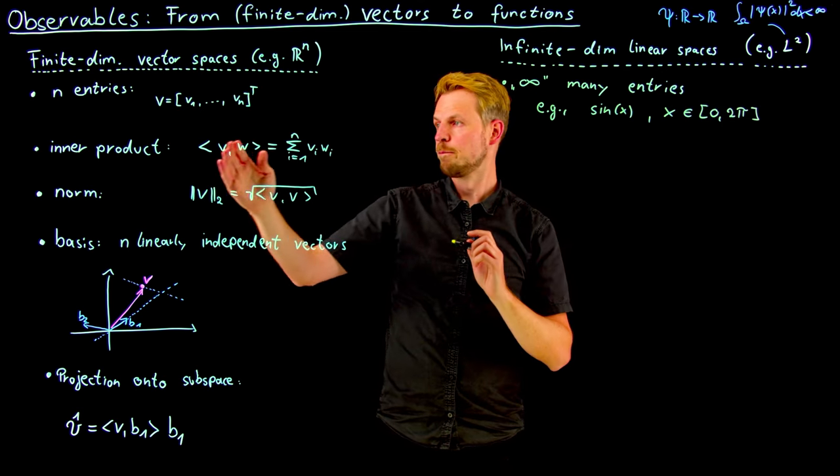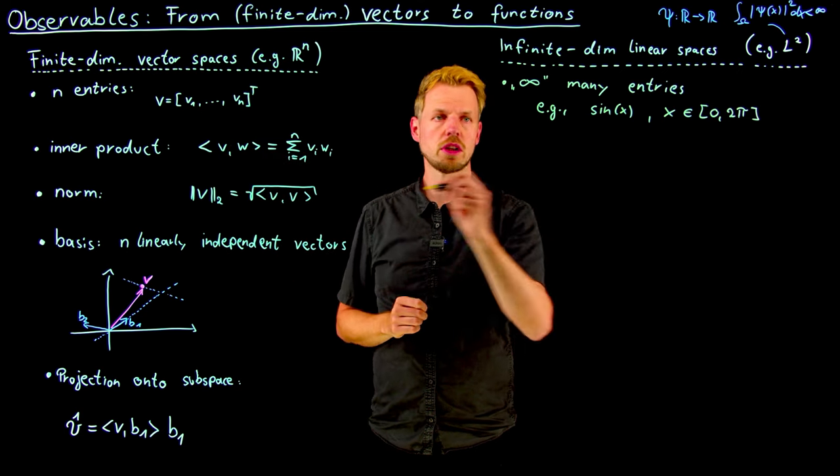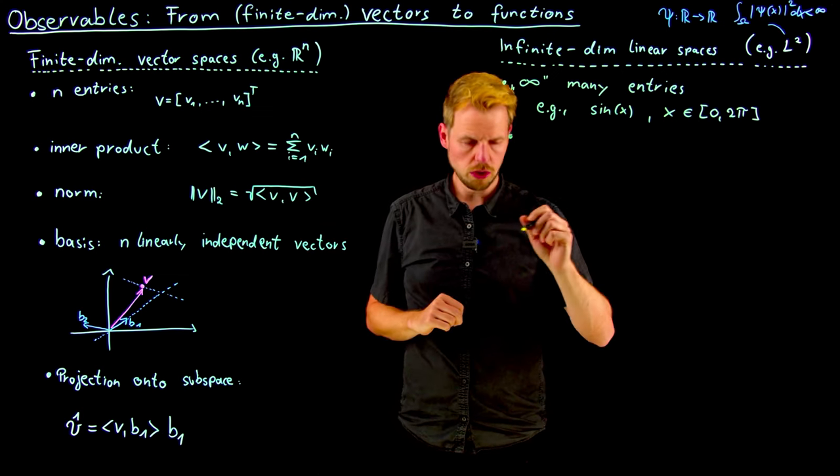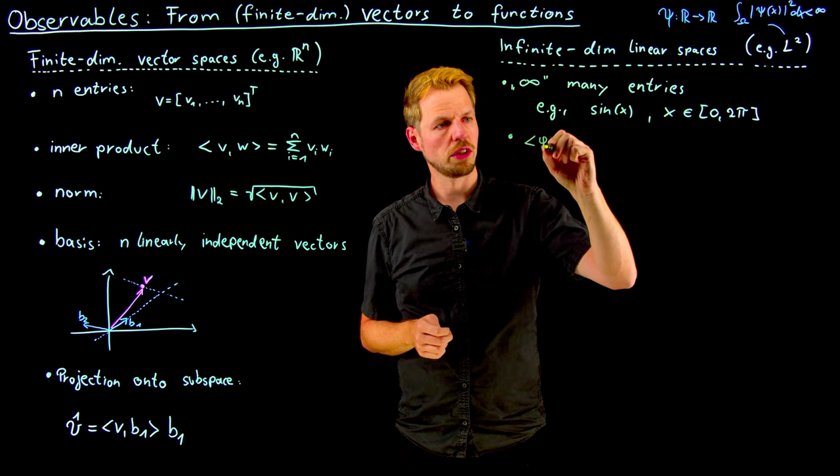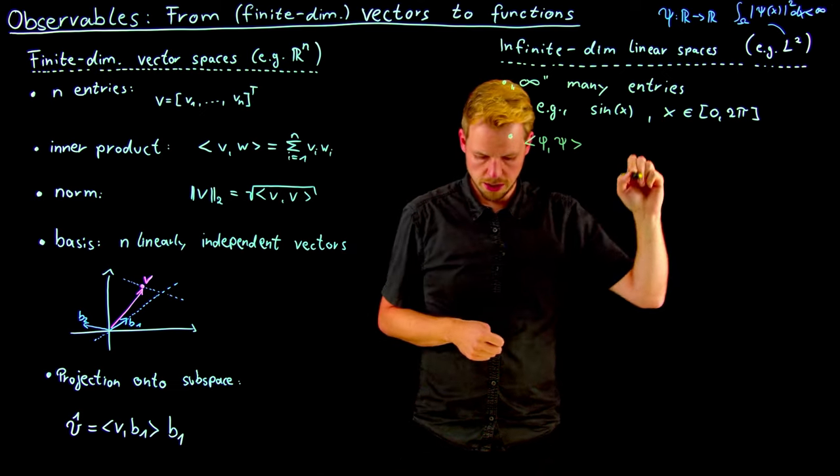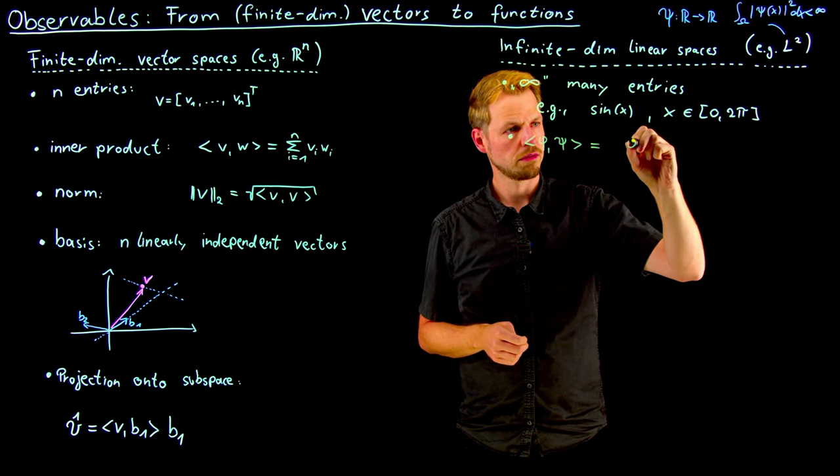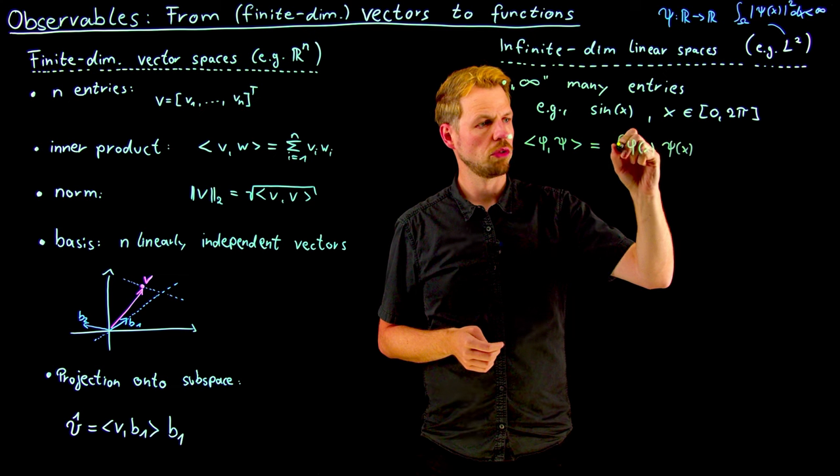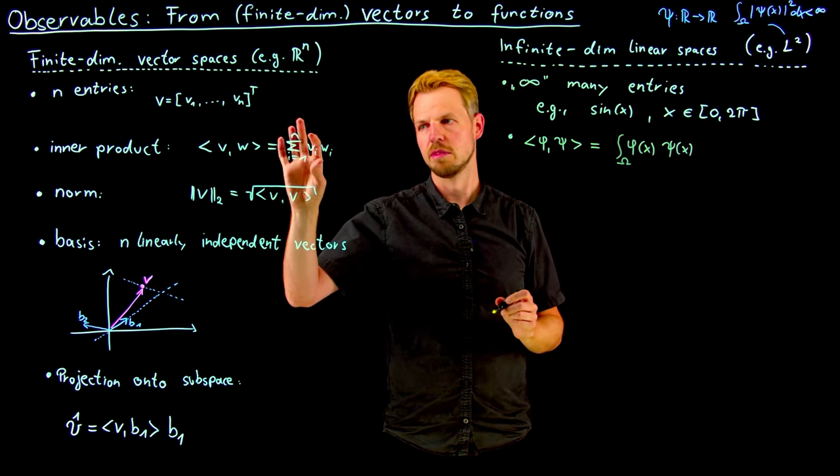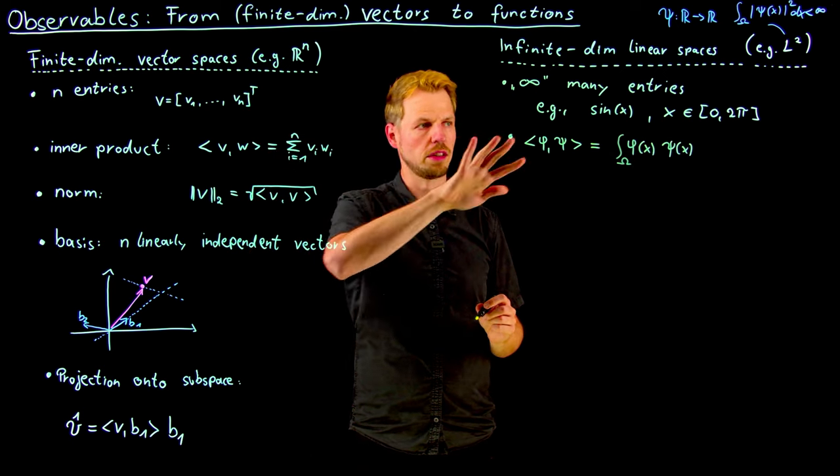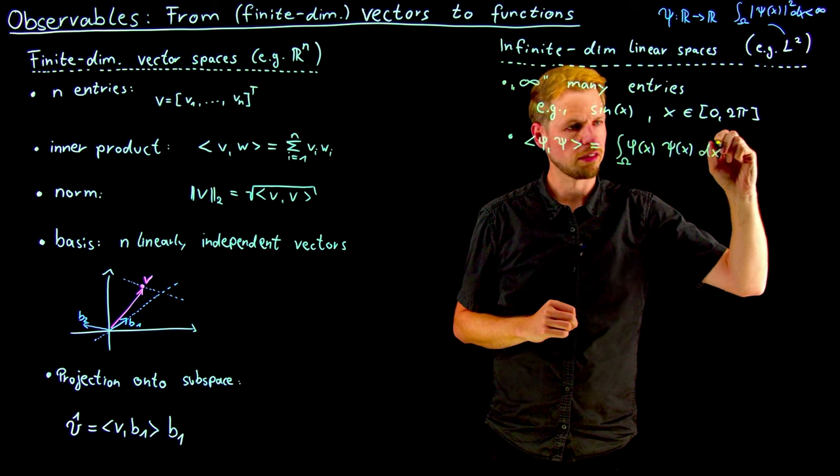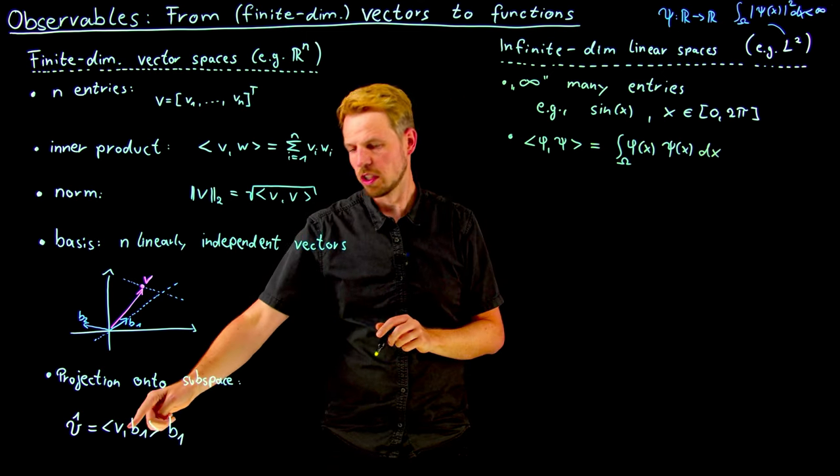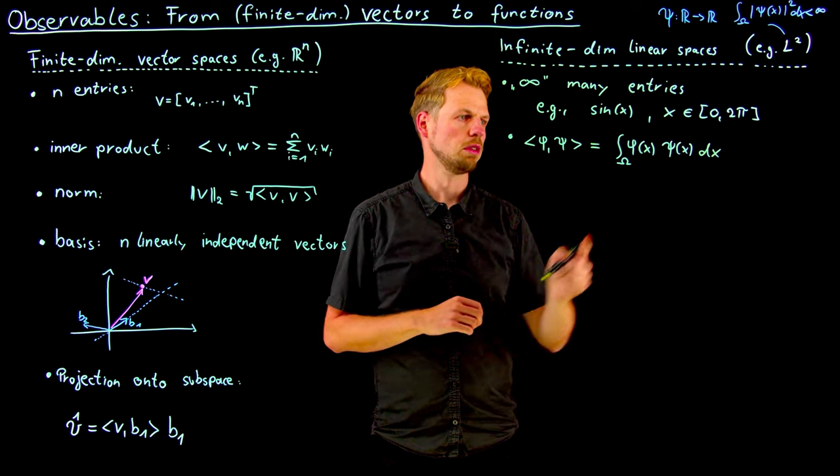We can still do all these tricks. For the inner product, here we had multiplication pointwise and then sum up. Here we also have pointwise multiplication. The inner product between two functions is phi of x times psi of x, but the sum doesn't make sense, so we take the integral, which is basically the sum as n goes to infinity. In the code I showed the projection step - computing this integral using a numerical algorithm.